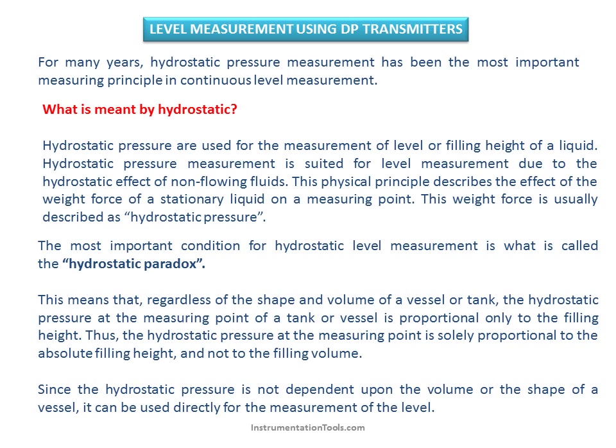The most important condition for hydrostatic level measurement is the hydrostatic paradox. This means that, regardless of the shape and volume of a vessel or tank, the hydrostatic pressure at the measuring point is proportional only to the filling height — not to the filling volume. Since hydrostatic pressure is independent of vessel volume or shape, it can be used directly for level measurement.